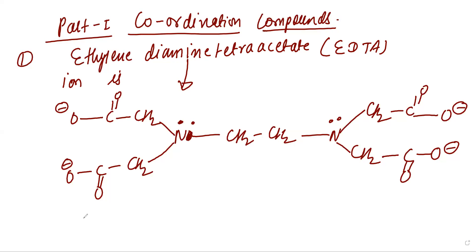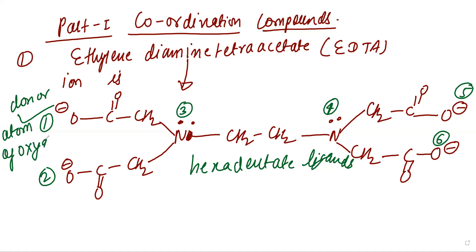Hexadentate means 6 lone pairs of electron is donating. One, two, three, four, five, six. So this is the lone pair at nitrogen. Having 4 oxygen donor atoms and 2 nitrogen atoms. The lone pair acts as donor.